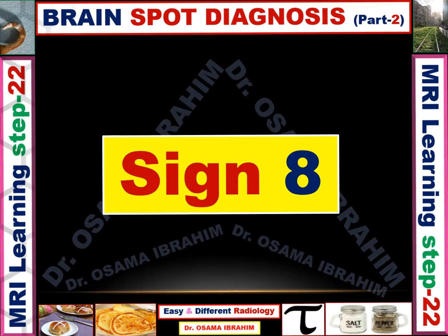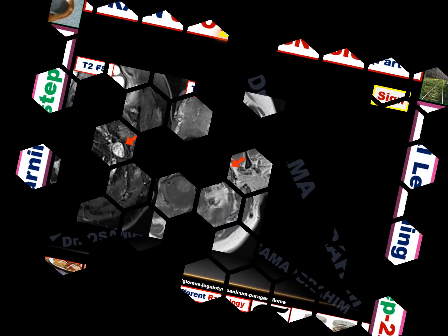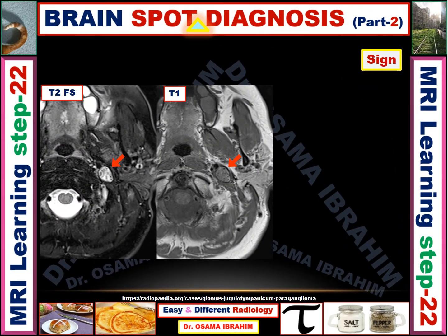And now sign 8. This is T1, as the subcutaneous fat appears bright and the CSF in the spinal canal appears dark. However, this is T2 because the CSF appears bright in the spinal canal and the subcutaneous fat is suppressed — so this is T2 with fat suppression. What is the name of the sign for this lesion?